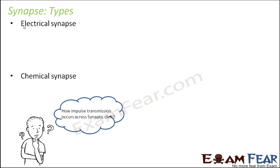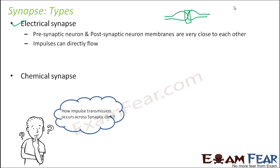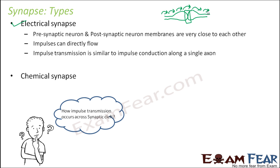In an electrical synapse, the pre-synaptic and post-synaptic neuron membranes are very close to each other — you hardly have any gap between the two. Here the impulse can directly flow, because there is no gap. The action potential gets shifted from one region to the neighboring region and in a similar fashion gets transmitted from one neuron to another. So impulse transmission here would be similar to impulse conduction along a single axon.